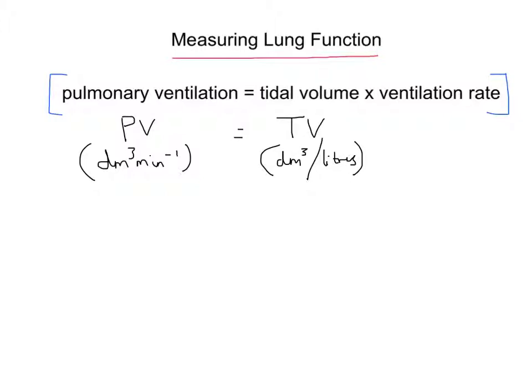One decimetre cubed is actually the same as one litre. The tidal volume is the volume of air in each breath. The ventilation rate is the number of breaths per minute — VR has units of minute to the minus one, meaning 'per minute.' If we multiply the volume of air in each breath by the number of breaths per minute, that gives us our pulmonary ventilation — the volume of air taken into the lungs every minute.